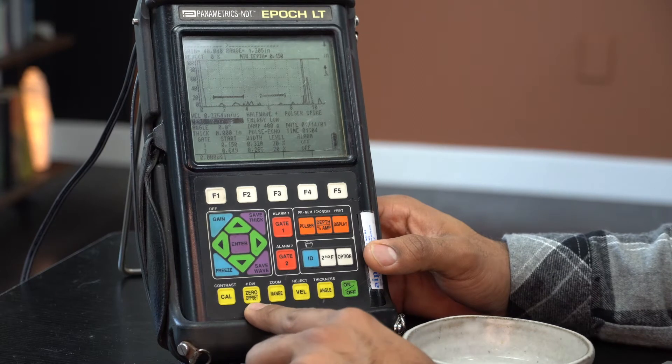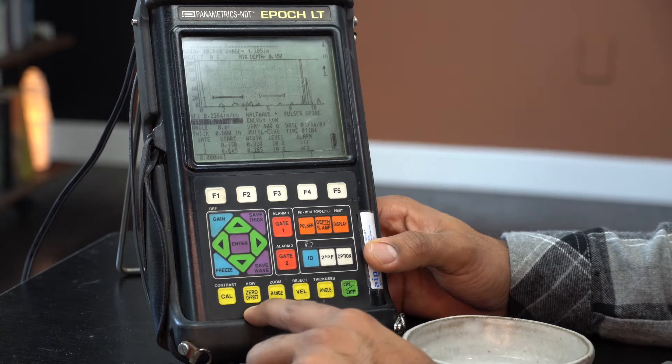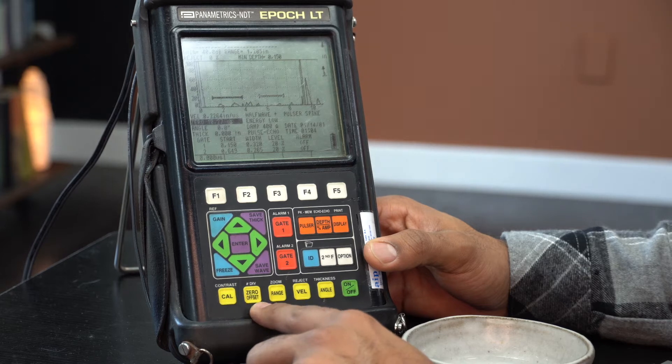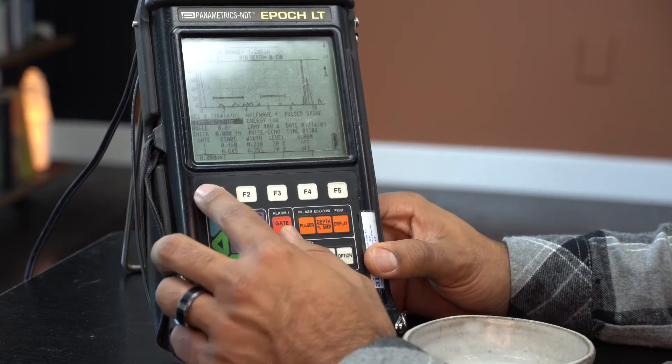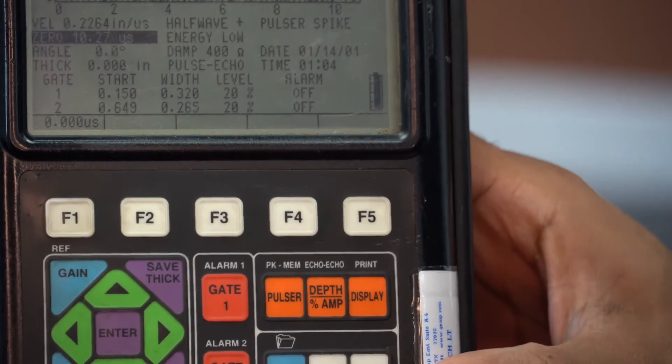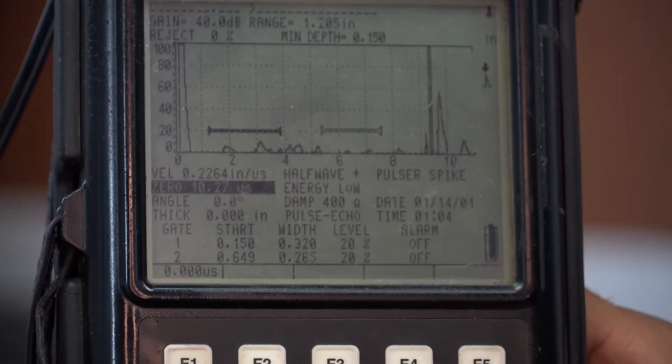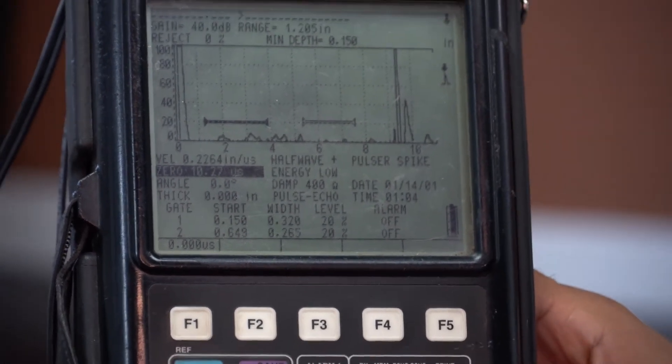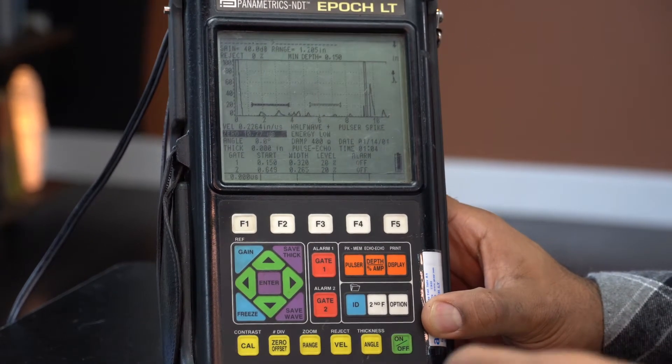On here they call it zero offset. Sometimes you'll also see probe delay. I think that is probably the most specific description of what it's actually doing. Sometimes also wedge delay. And so we have, not sure if the video is going to pick that up, but it's set to about 10.27 microseconds right now. I'm not quite sure if that's the right one but that's going to get us into the general area so that we can start reining it in.